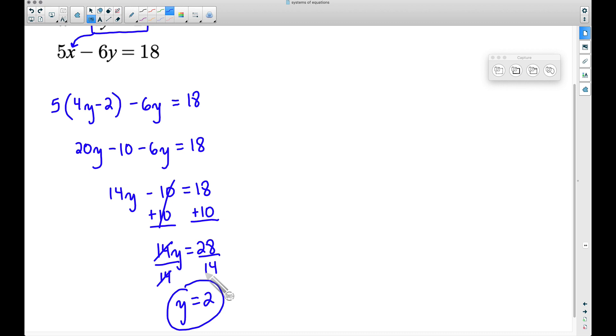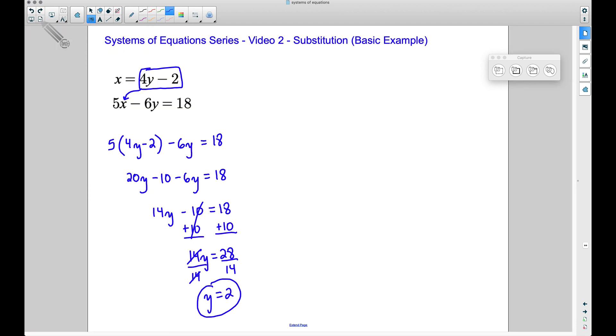Now we are not done with this problem. We have found one of the numbers in our ordered pair. Now we need to find the second number in our ordered pair. Well, in this case, notice this first equation we had here: we had X equals 4Y minus 2. And since we know Y equals 2, we can take that 2 and we can plug it into Y because Y equals 2.